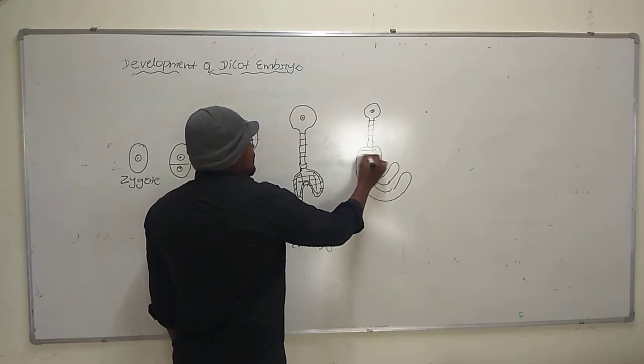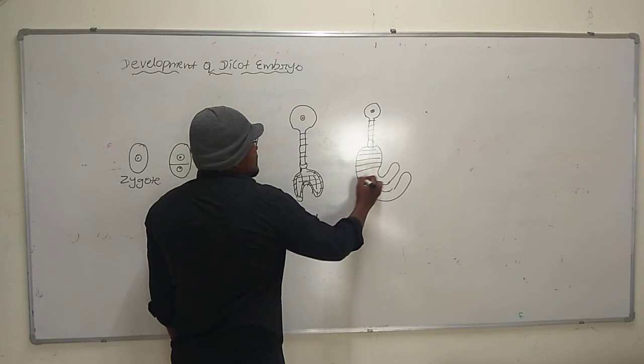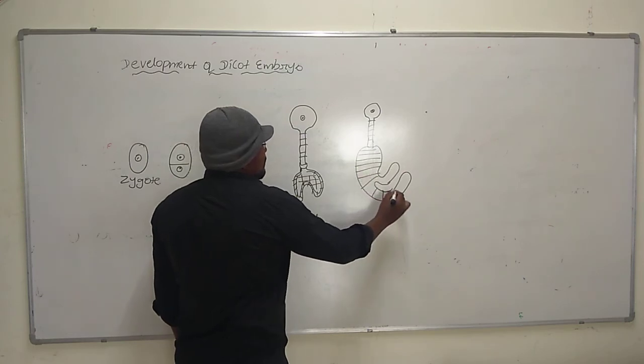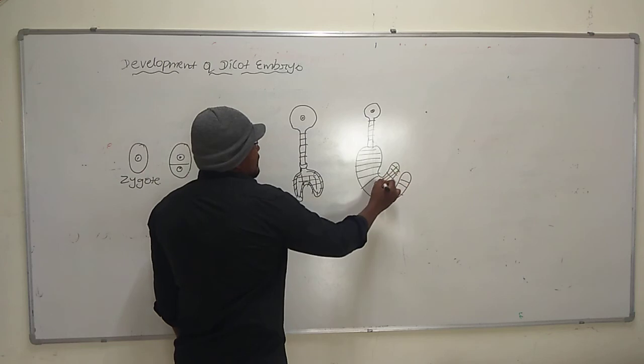After that you have to write the cells in mature embryo. These are the cotyledons.